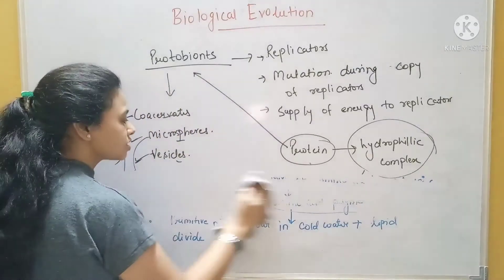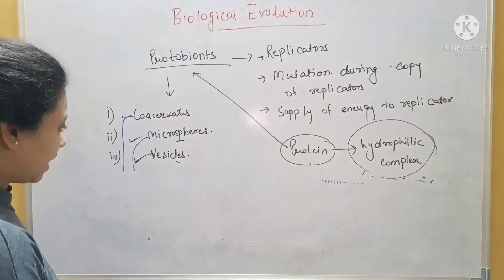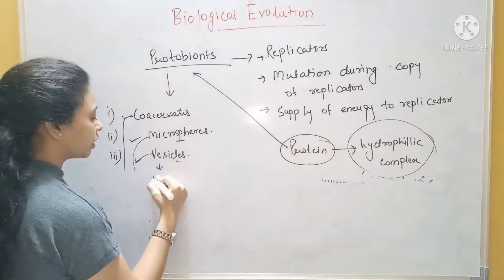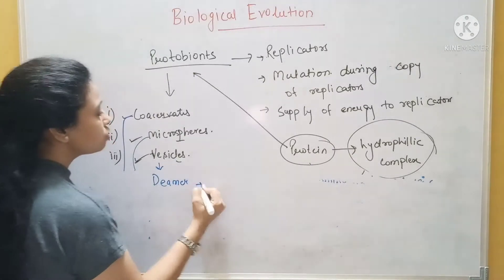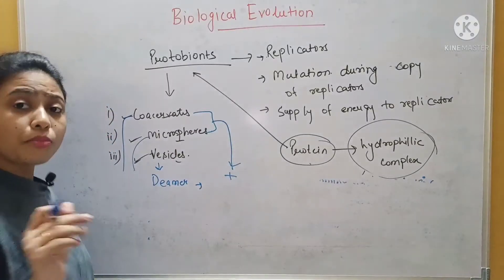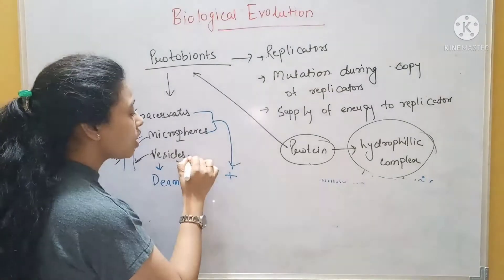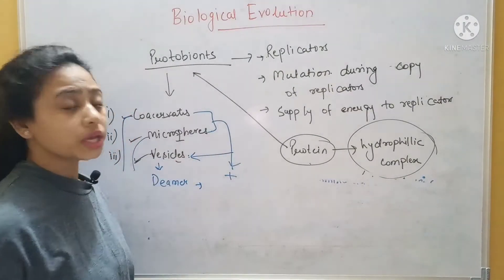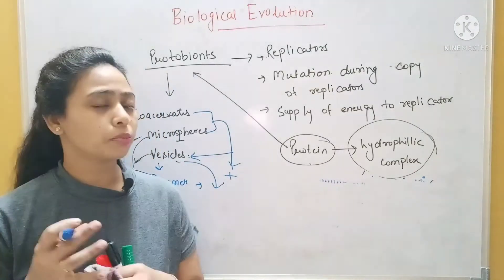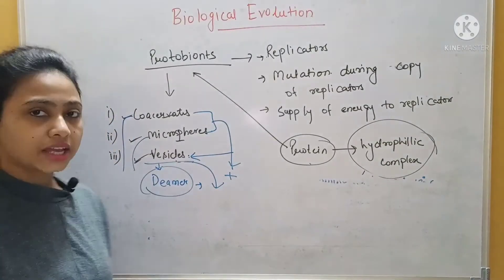The next category is vesicles, which were given by Deemer. What did he do? He mixed both coacervates and microspheres together and generated vesicles. Vesicles had all characteristics — lipid membrane, nucleic acid, protein — everything. And he named it vesicle.